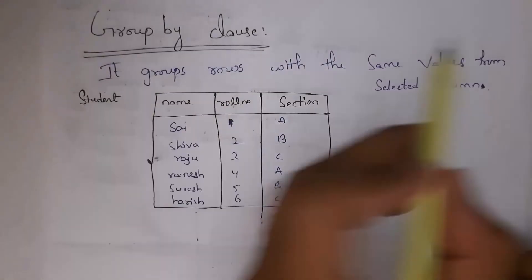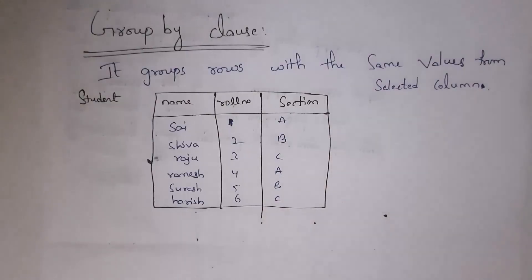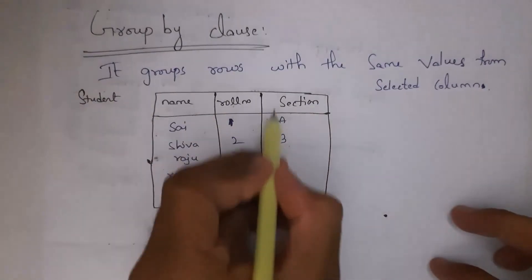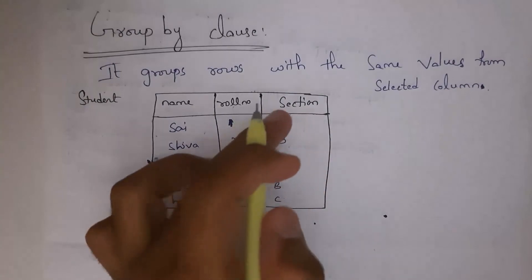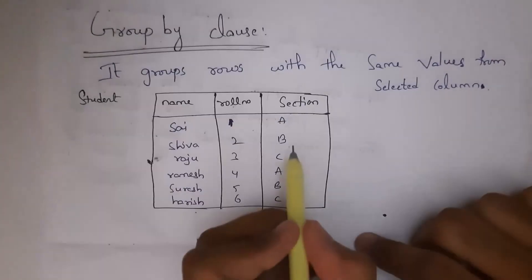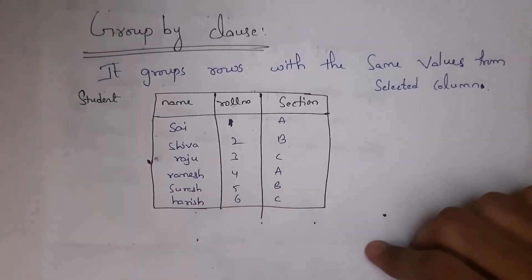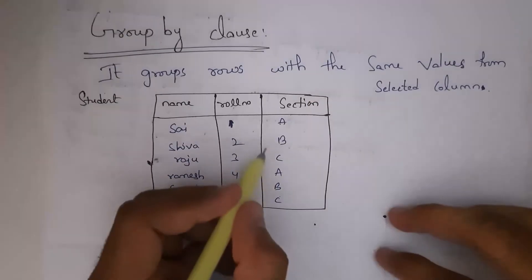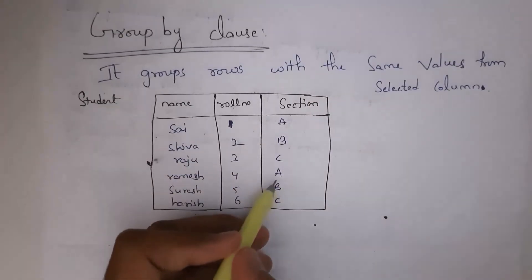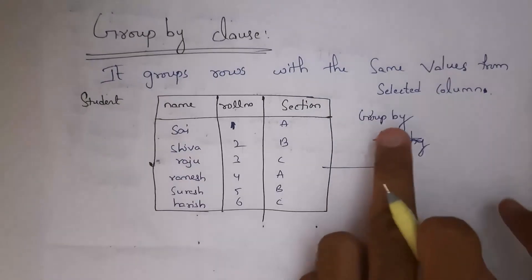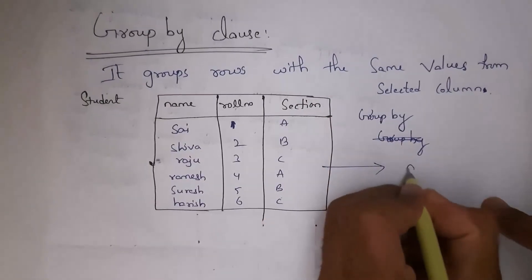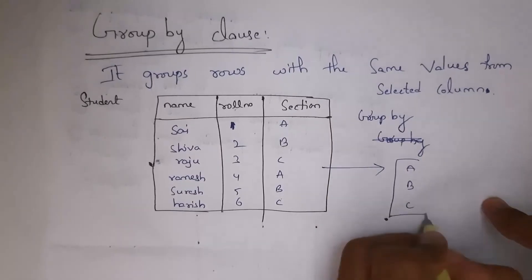Next, what is the use of GROUP BY clause? GROUP BY groups rows with the same values from a selected column. For example, in the student table the section column has A repeated twice, B twice, and C twice. Whenever I apply GROUP BY to that column, it groups same values and displays them only once, giving output: A, B, C.